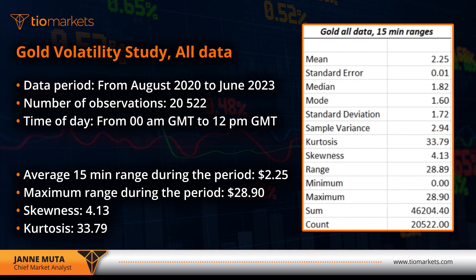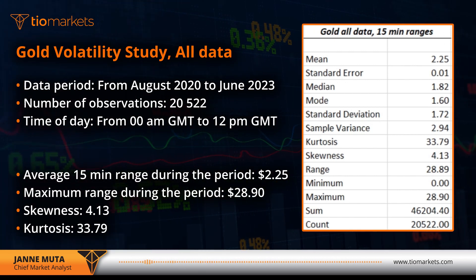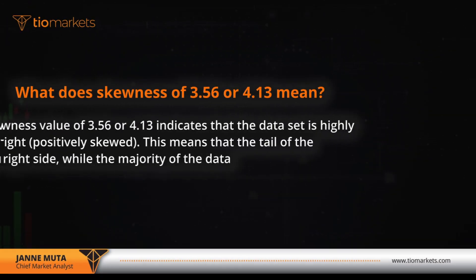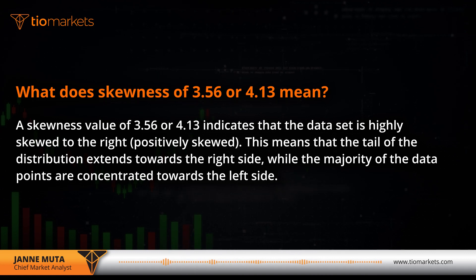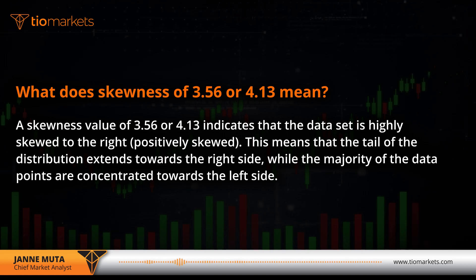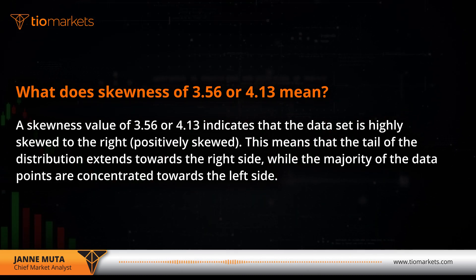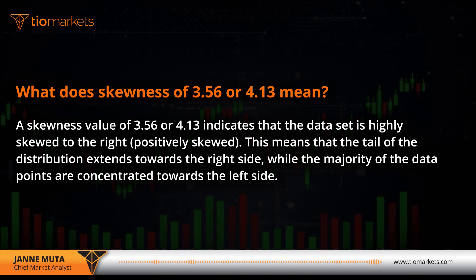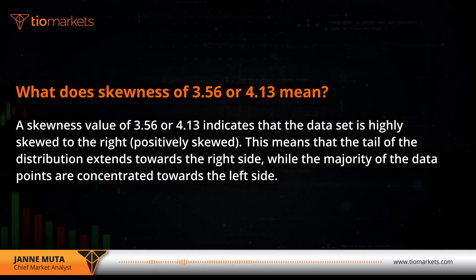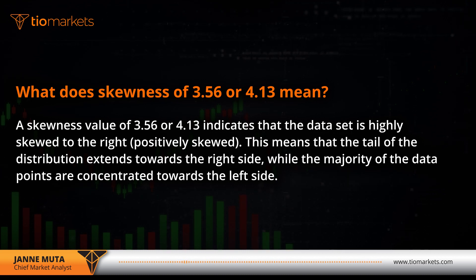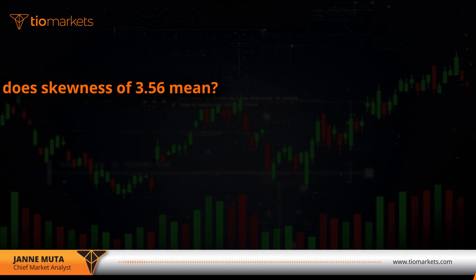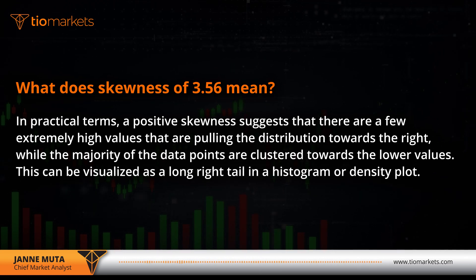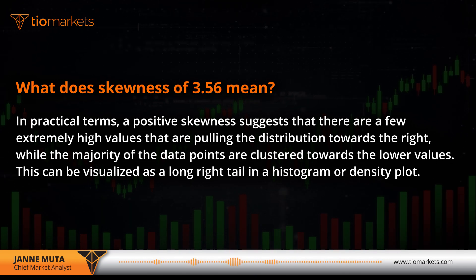We should question the average a little bit, because the skewness and kurtosis numbers are very high. A skewness value of 3.56 or 4.13 — as you'll see in these two datasets — indicates that the data is highly skewed to the right, positively skewed. This means there are few extremely high values pulling the distribution to the right, while the majority of data points are clustered towards the lower values.